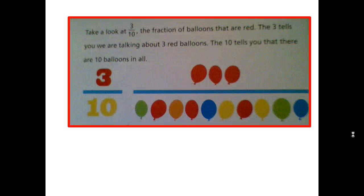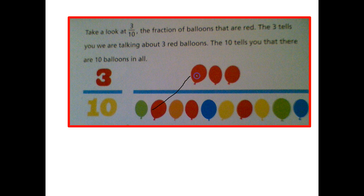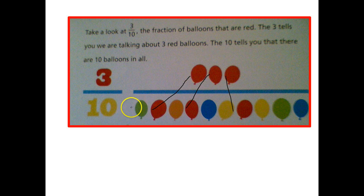Take a look at three-tenths, the fraction of balloons that are red. The three tells you we are talking about three red balloons. The ten tells you that we are talking about ten balloons in all. Three of the ten are red, or three-tenths are red. So the denominator, our bottom part, tells us the whole, and the top part tells us the numerator or part of that whole.